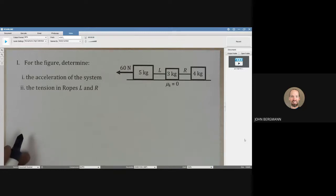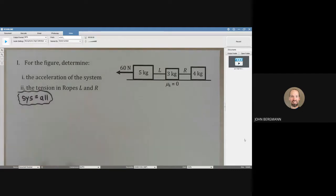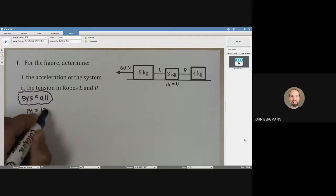What I think we should do here is first, let's say that the system is all three of these. If the system is all three of those, then the mass of that system is 12 kilograms.